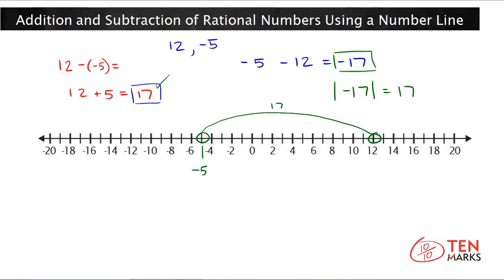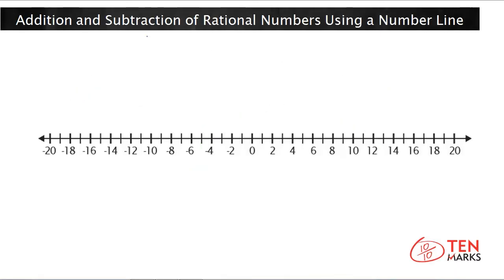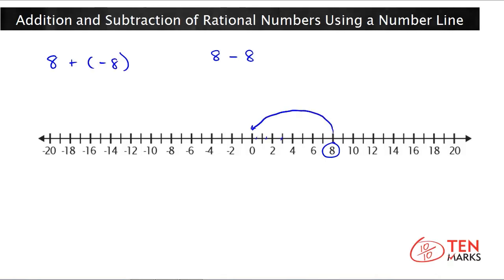Now let's try another problem. What if I want to add 8 plus negative 8? You start at the number 8 on the number line. Normally when you add, you go right — however, the negative sign means you go in the opposite direction, so 8 plus negative 8 is the same as 8 minus 8. If we jump back by 8 — 1, 2, 3, 4, 5, 6, 7, 8 — the number I land on is 0. So 8 plus negative 8 equals 0.